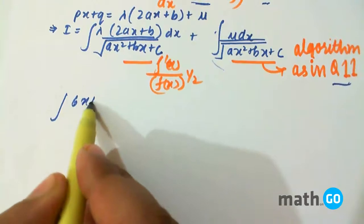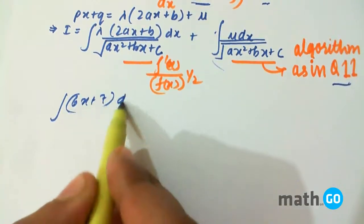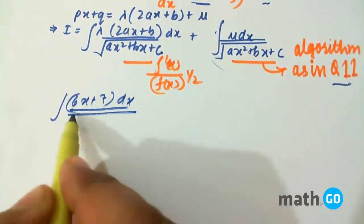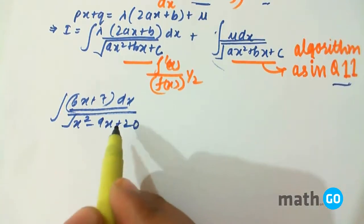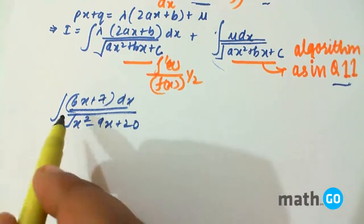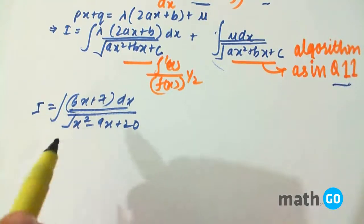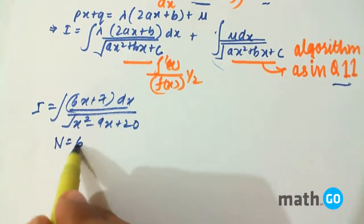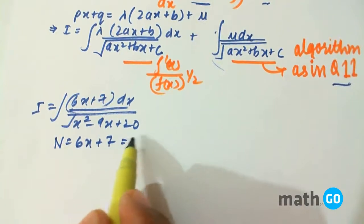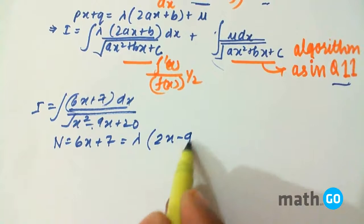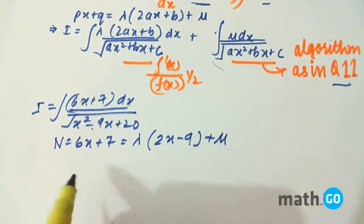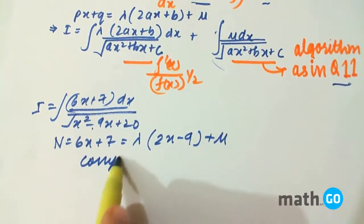Integral of 6x plus 7 into dx upon root of x square minus 9x plus 20. This is I. Now we have the numerator equals to 6x plus 7 which has to be lambda into derivative of this that is 2x minus 9 plus mu. Now we solve this by comparing coefficients.